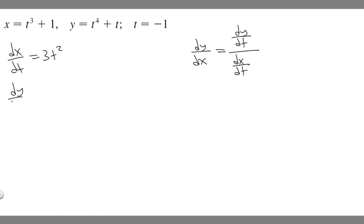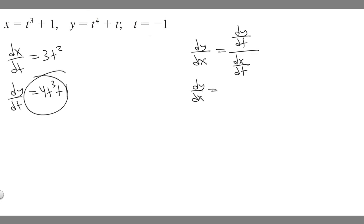Now let's do dy/dt. So t to the 4th gives 4t cubed, and then plus t gives plus 1. So dy/dt is 4t cubed plus 1 and dx/dt is 3t squared. Plugging them in, dy/dx equals 4t cubed plus 1 over 3t squared.